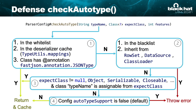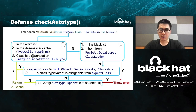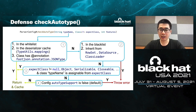Going back to checkAutoType — I will detail the control flow and show how to bypass it. First, if the target class is in the whitelist or in the deserializer cache, or has the annotation @JSONType, it will pass the check and be returned and cached. Next, if the target class is in the blacklist or inherits from ClassLoader, DataSource, or other dangerous types, the method will throw an error and exit. If not, if the incoming expectClass is not null and is not generic types like Object, Serializable, Cloneable, Closeable, EventListener, or Collection, and the target class is assignable from expectClass, it will pass the check.